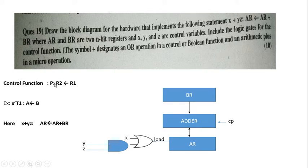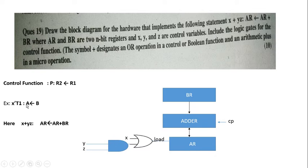Multiple micro-operations that can take place in parallel are separated by commas after the colon. Here, only a single micro-operation is performed when condition p occurs. Another example: x-complement, t1 colon A implies B — meaning when x is 0 and time instant t1 occur simultaneously, the transfer from register B to A takes place. So our given condition is x plus yz in the control function part, and AR plus BR is the micro-operation part.